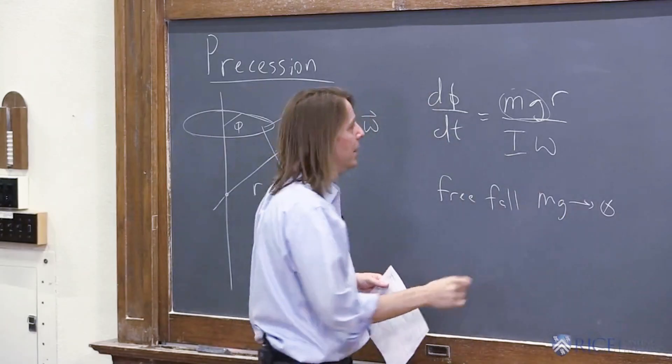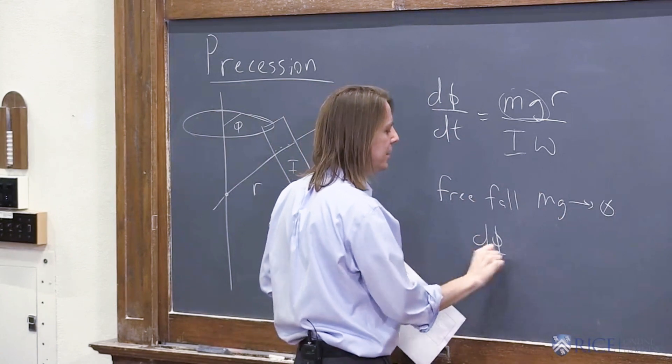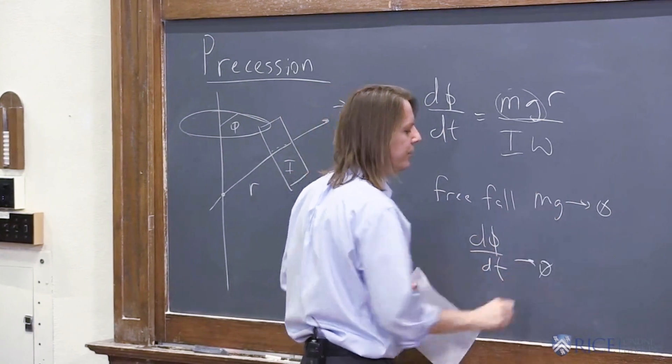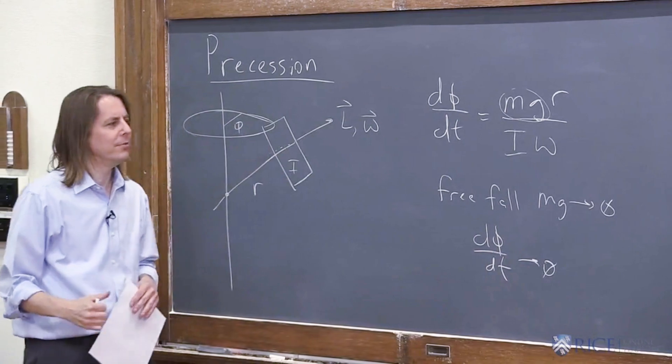Or at least get smaller. Therefore, the precession rate, Tt, should go to zero, or at least get smaller if we don't quite achieve free fall.